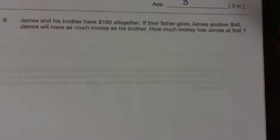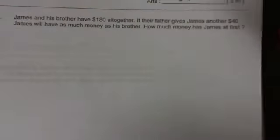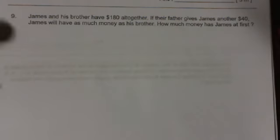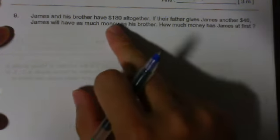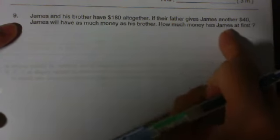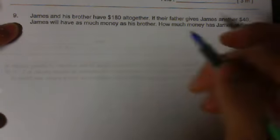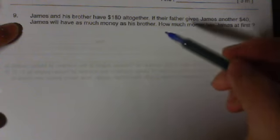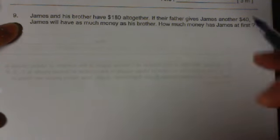Question 9. I am sorry the orders seem to be mixed up a bit. James and his brother have $180 all together. If their father gave James another $40, James will have as much money as his brother. How much money has James at first?